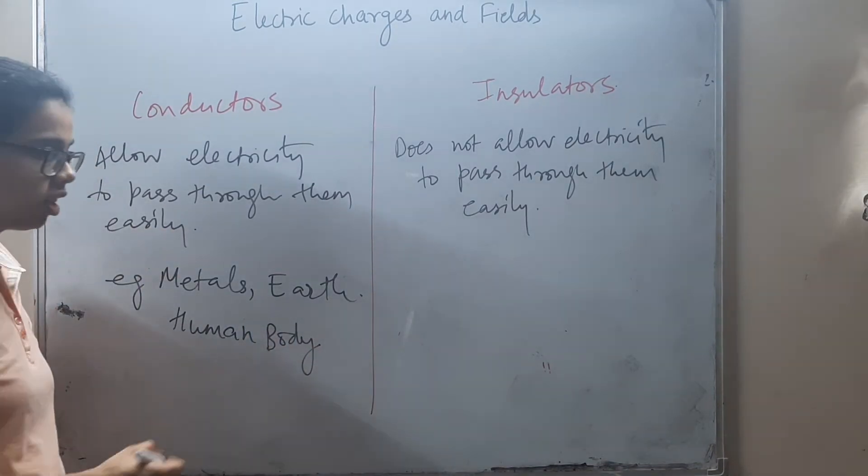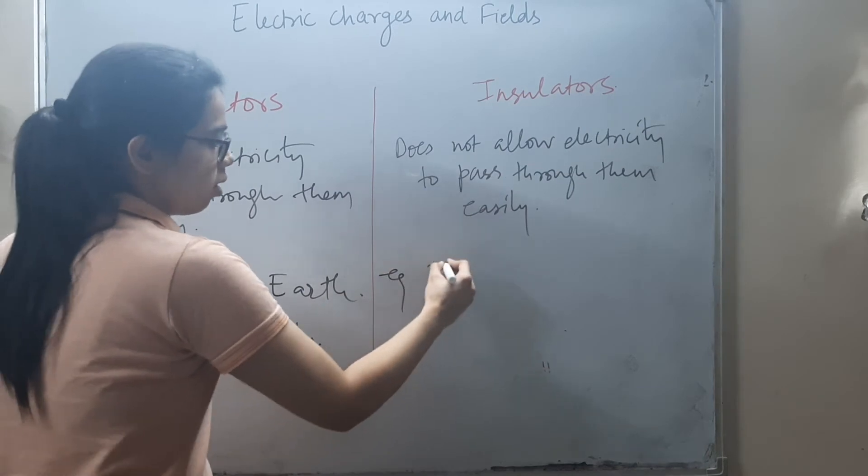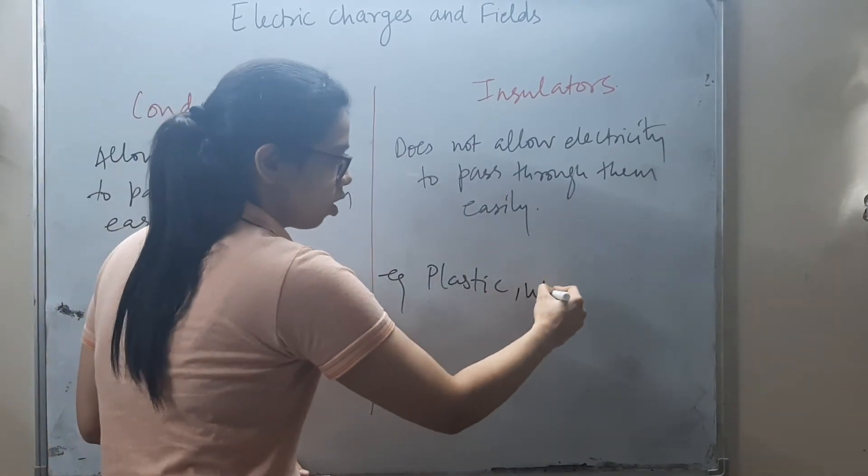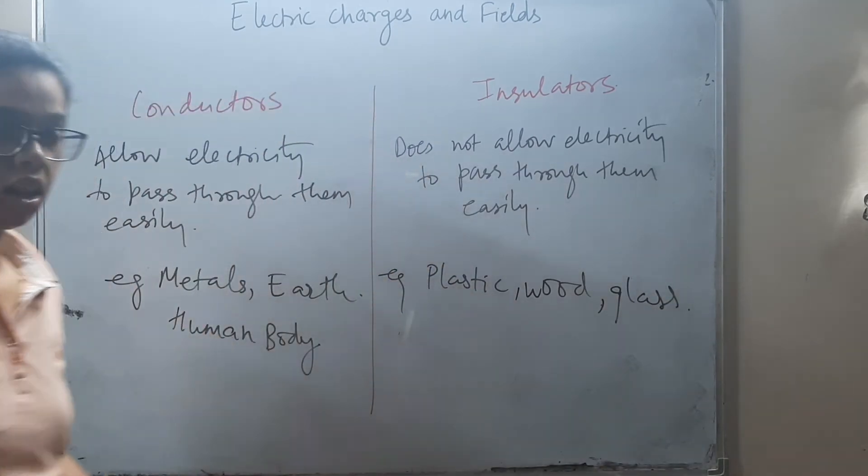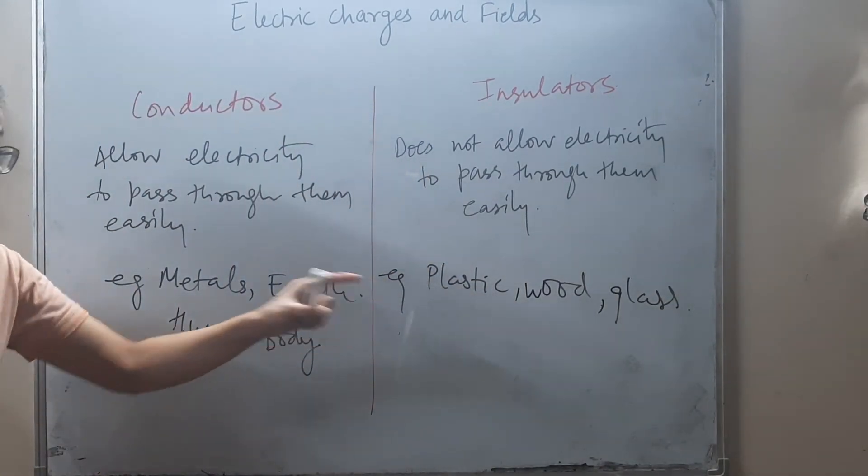Insulators do not allow electricity to pass through them easily. Examples are plastic, wood, and glass. These are examples of conductors and insulators.